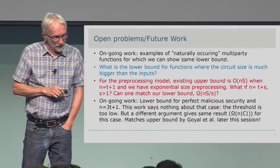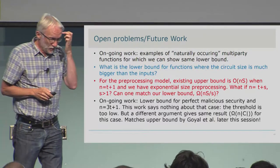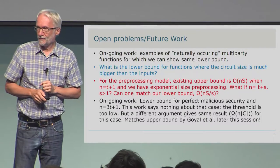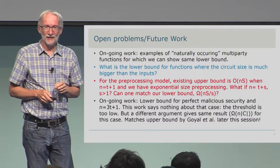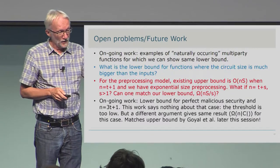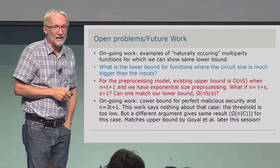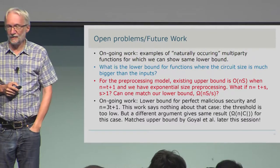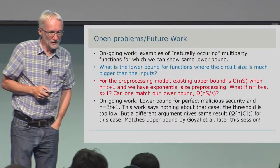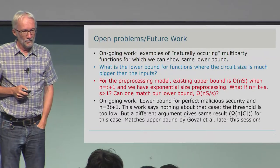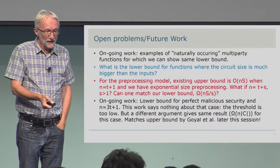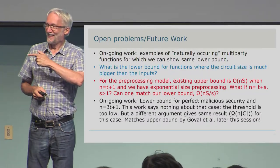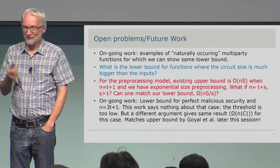Finally, something which used to be an open problem but is now essentially closed: a lower bound for perfect malicious security with n = 3t+1. You might think malicious security implies passive security and therefore our bound applies directly — but the threshold here is n/3, and our bound degrades down to essentially nothing at that threshold. It turns out there's a different argument that explicitly exploits malicious security and gives the same result: n times circuit size. By coincidence almost too good to be true, the next talk in this session by Goyal et al. will show that's exactly the matching upper bound.